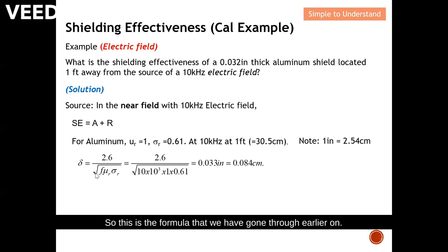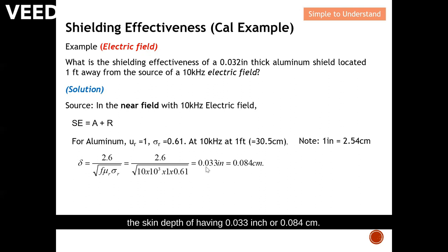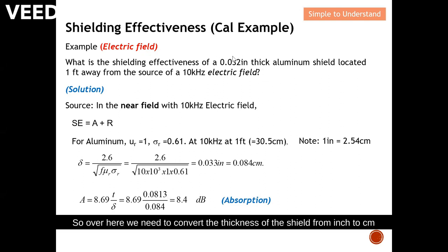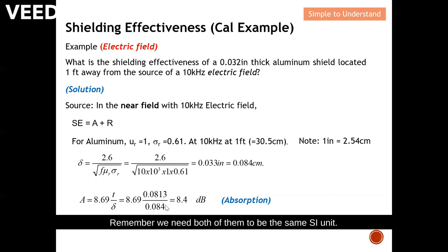Using the skin depth formula, we compute a skin depth of 0.033 inch or 0.084 centimeter. After computing the skin depth, we substitute it into the absorption formula. The thickness of the shield is 0.0813 centimeter — we convert the thickness from inches to centimeters so both values share the same units. From here we compute that the absorption loss is 8.4 dB.